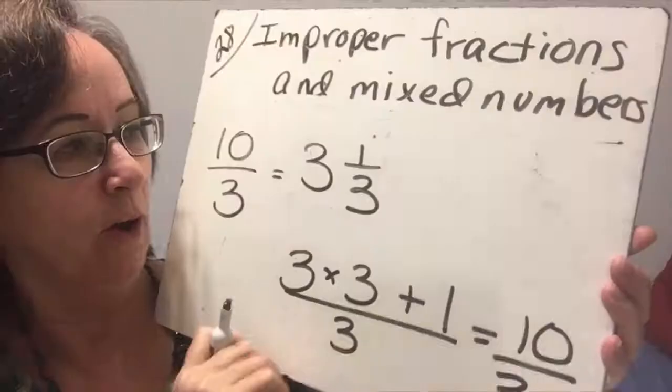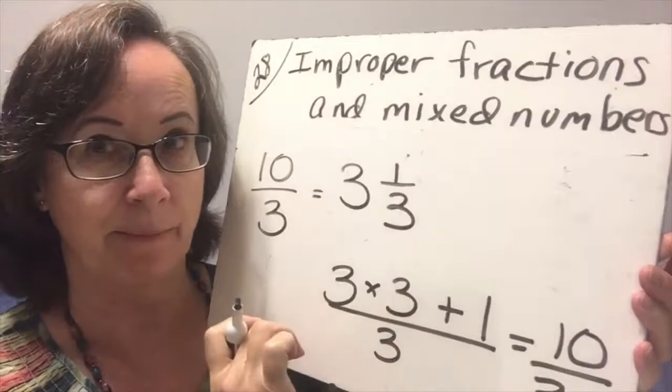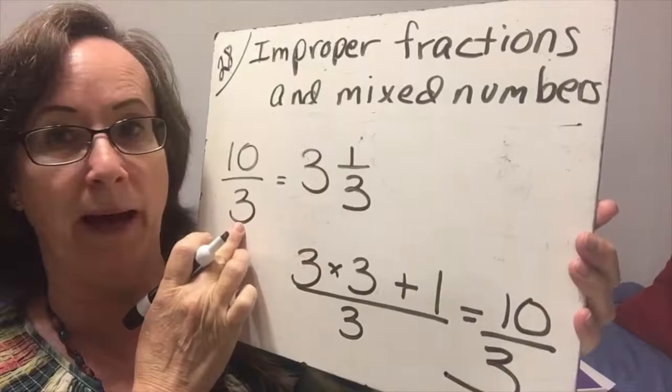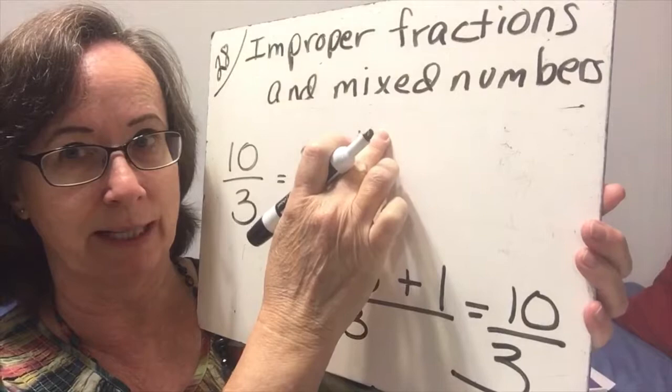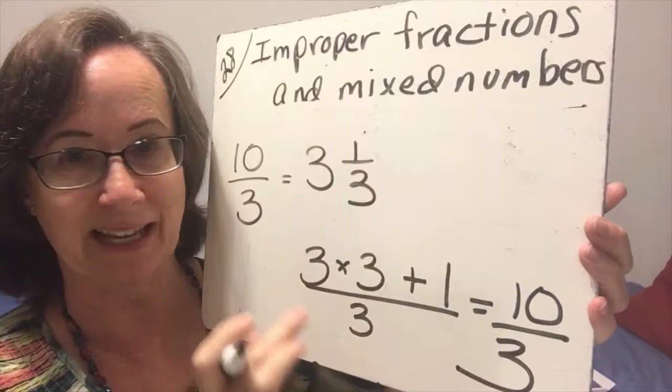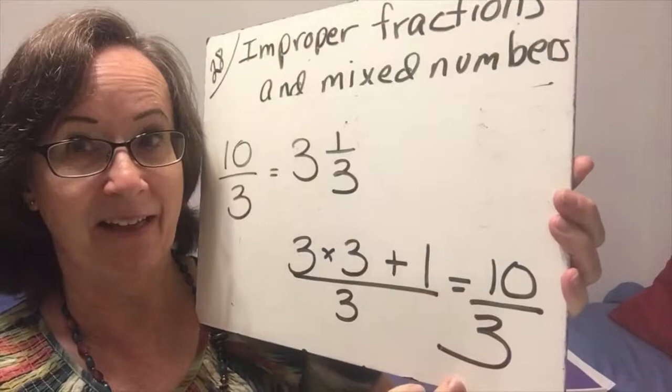When we are going backwards from a mixed number back to an improper fraction, we multiply the whole times the number of pieces that make a whole. So 3 times 3 is 9 plus one more is 10. And we put it all over 3 because 3 makes a whole. And we get 10 thirds. So let's practice that.